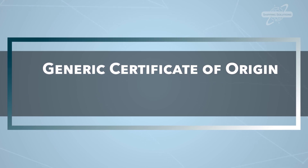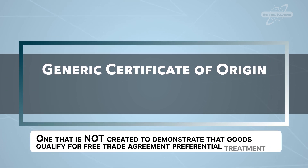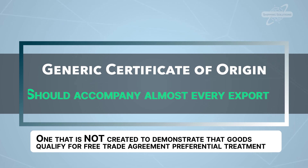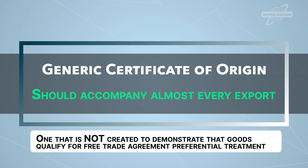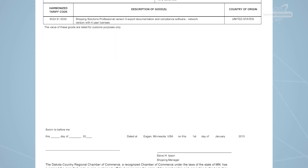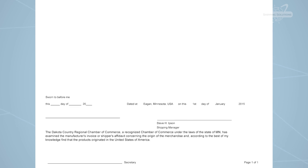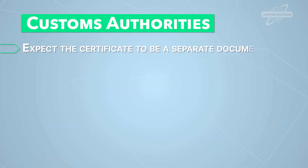A generic certificate of origin — one that is not created to demonstrate that goods qualify for a free trade agreement preferential treatment — should accompany almost every export because it might follow the product through its life, including re-export. It is documentary evidence that the goods originated in the country stated in the certificate, commercial invoice, or packing list. Customs authorities expect the certificate to be a separate document from the commercial invoice or packing list.